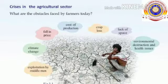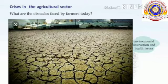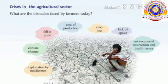Next, you have to learn about the crisis in the agriculture sector. What are the obstacles faced by farmers today? They are exploitation by middlemen, climate change, fall in price, cost of production, crop loss, lack of space, environmental destruction, and health issues. Many of these problems can be overcome if the approach to agriculture is made scientific.